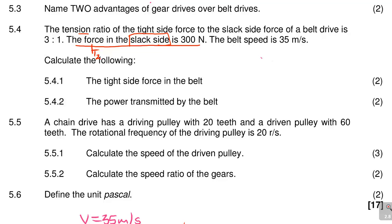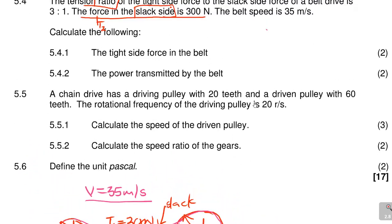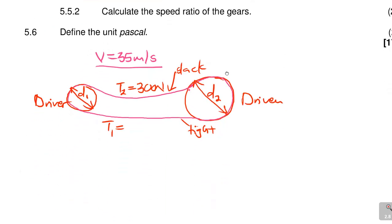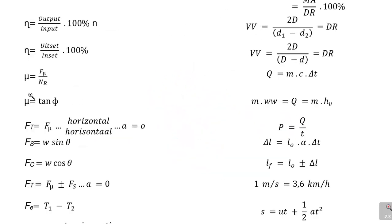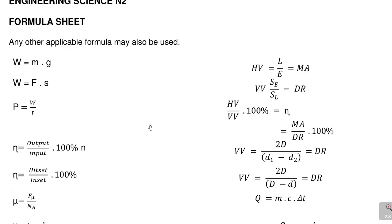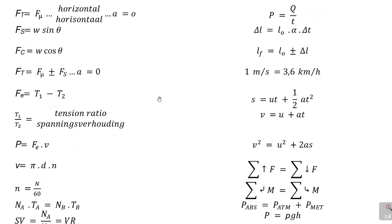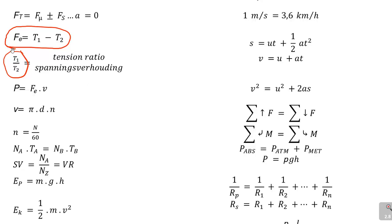The tension ratio of the tight side force to the slack side force is 3 to 1. The key formulas here are: effective force Fe = T1 minus T2; tension ratio T1 over T2; power P = Fe times V; and V = pi·D·N. The tension ratio means T1 is to T2, which is 3 is to 1.